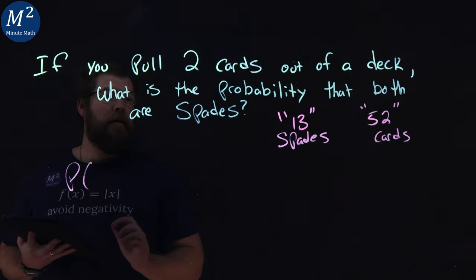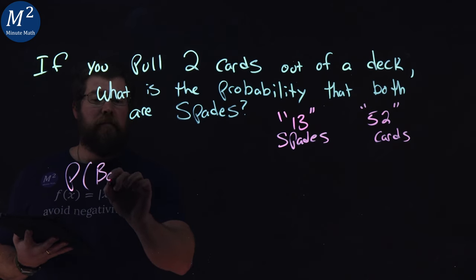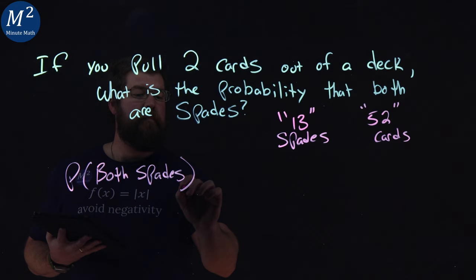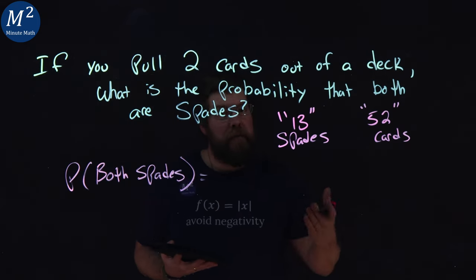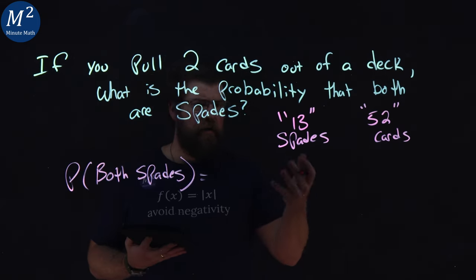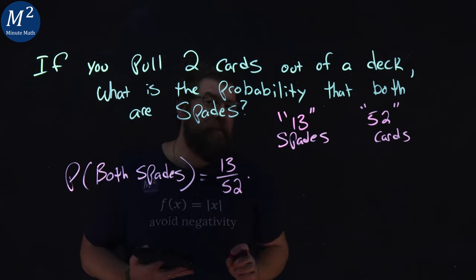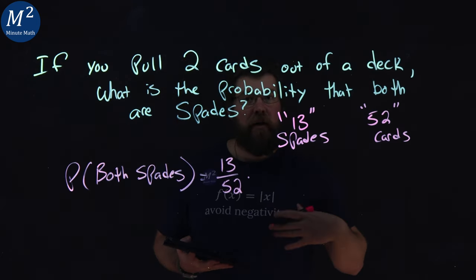So, the probability that both cards are spades is the probability that the first card is a spade, 13 out of 52, multiplied by the probability that the second card is a spade.